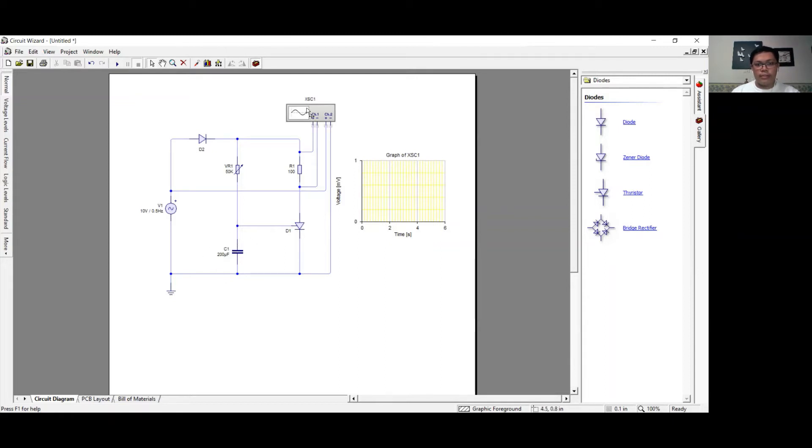I also connected an oscilloscope to view the output waveform which is taken at the load resistance along with the AC voltage source. I connected a diode D2 to ensure that only positive current will flow through the rest of the circuit.